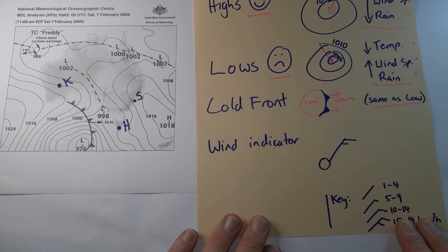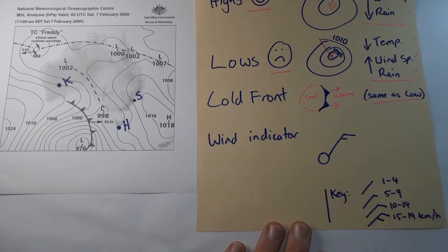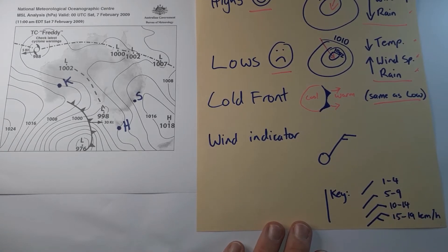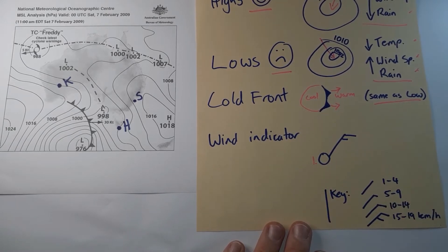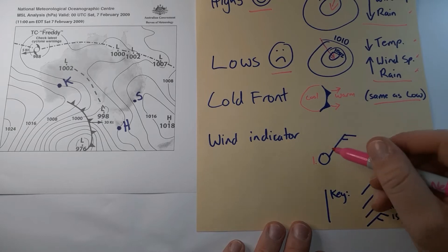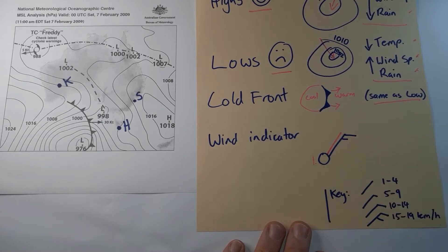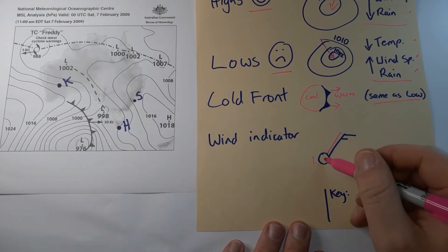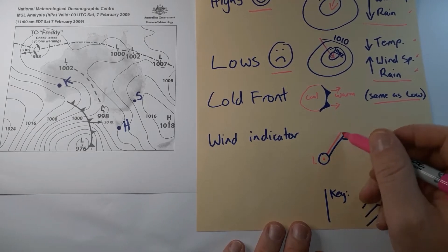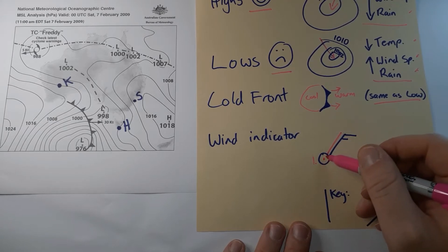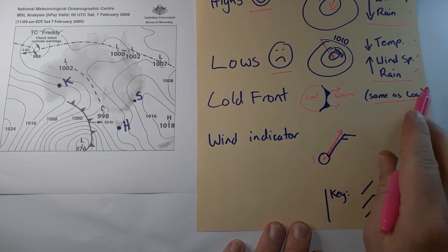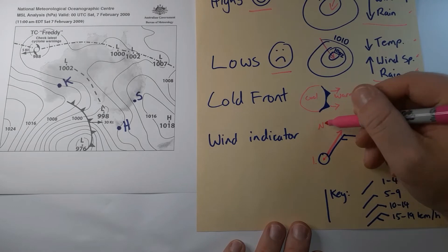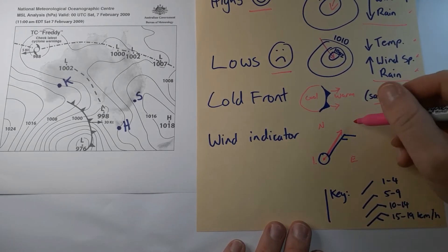The last symbol is called a wind indicator, made up of three elements. The first is a location dot — where wind speed and direction were measured. The second is the wind direction arm. I like to pretend I'm standing on that dot and that's my arm: as it points away from me, I'm pointing at the name of the wind. In this example, the arm points roughly halfway between north and east, so I'd call that a northeasterly.